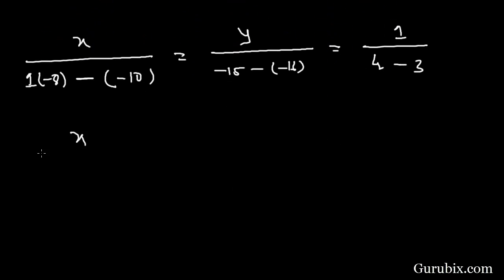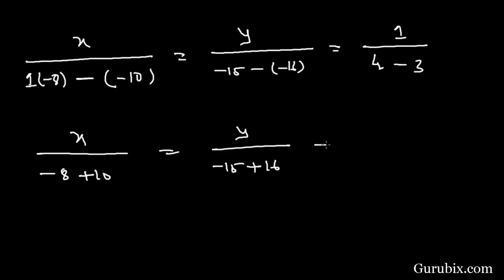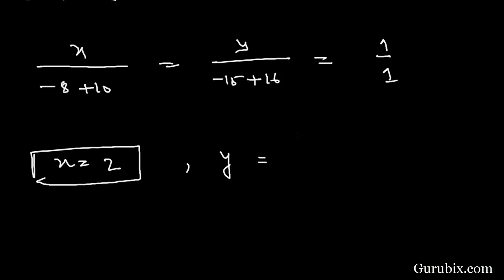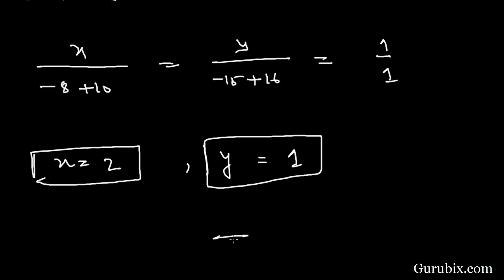So x equals (-8 + 10) over (4 - 3), which is 2 over 1, giving x = 2. And y equals (-15 + 16) over 1, which is 1 over 1, giving y = 1. So the solution of the pair of linear equations is x = 2 and y = 1. Thank you.